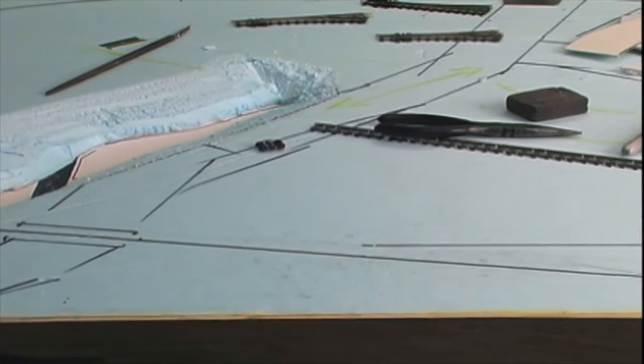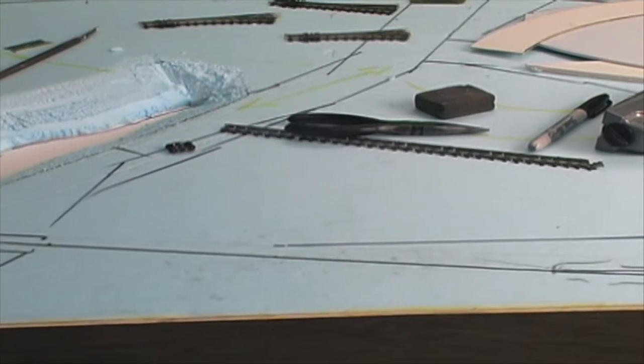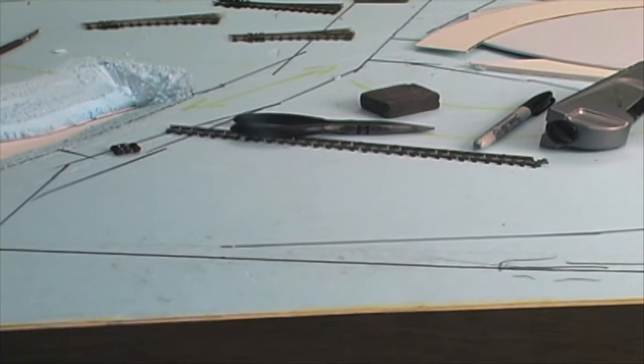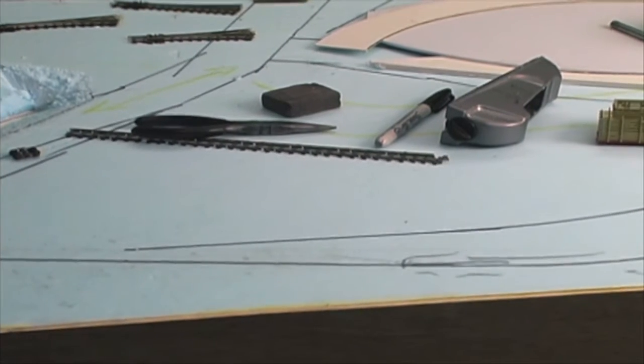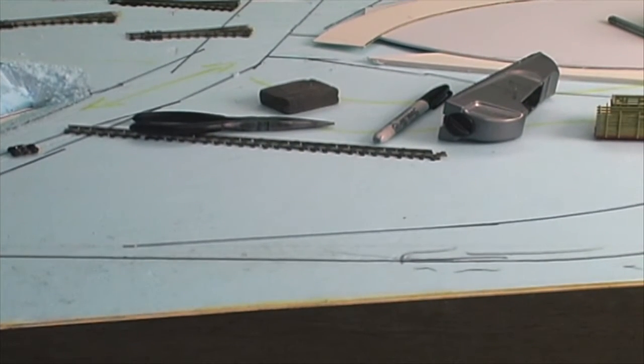We're going to mount the track. I'm going to preassemble some of it. We're going to mount it on double-sided carpet tape right on top of the blue foam, and then I'll wire it and then we'll test run a train or two.